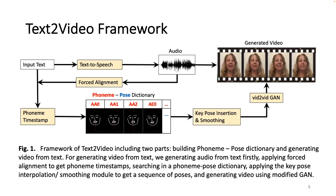The framework of text-to-video includes two parts: building a phoneme pulse dictionary and generating video from text. As shown in Figure 1, the input to our system is text, and the output is generated video of a talking human. Given an input text, we use TTS to generate speech from the text. Then we apply force alignment to obtain phoneme timestamps and look up phoneme pulses in our phoneme pulse dictionary. Next, we apply the k-pulse interpolation and smooth module to generate a sequence of pulses. Finally, we use GAN to generate videos.